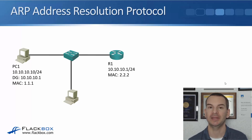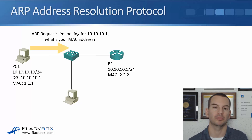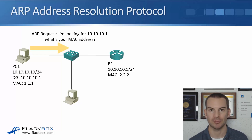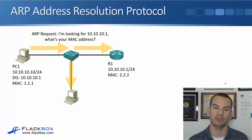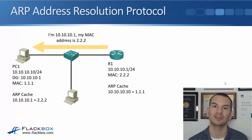In the example, we've got PC1 on the left with IP address 10.10.10.10 and MAC address 1.1.1, and it wants to communicate with its default gateway at 10.10.10.1. It needs to send out an ARP request to find out the default gateway's MAC address. So it sends out an ARP request saying, I'm 10.10.10.10, I'm looking for 10.10.10.1, what's your MAC address? That broadcast is flooded out all ports. The PC on the bottom is not 10.10.10.1 so it discards the packet, but the router is, so it sends back an ARP reply saying, I'm 10.10.10.1 and my MAC address is 2.2.2.